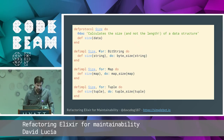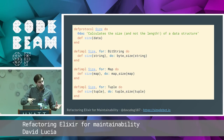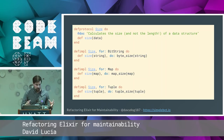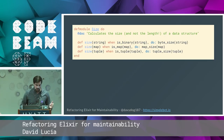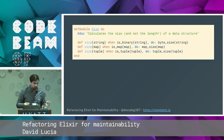Here we have size implemented for bit string, map, and tuple. At compile time, Elixir takes all these defimpl definitions — which can be scattered throughout your codebase or even in separate libraries — and does what's called protocol consolidation. It takes all of these and combines them. What it ends up with is something like this: all of these functions become just function-head pattern matching. It's really cool and very performant.